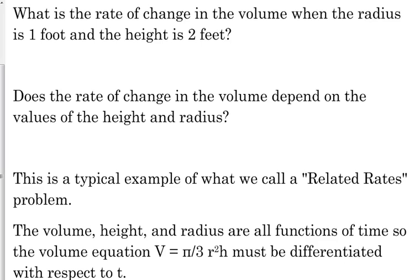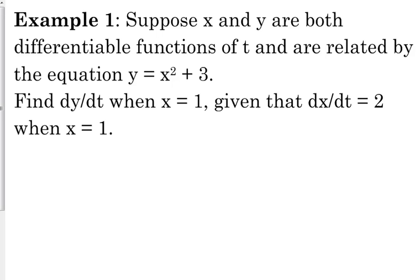So your volume, your height and your radius are all functions of time. So when we take the derivative of our volume function, π/3 r²h, we've got to take the derivative of that with respect to time, not with respect to one of those variables. So that's why we did implicit differentiation right before we did this.